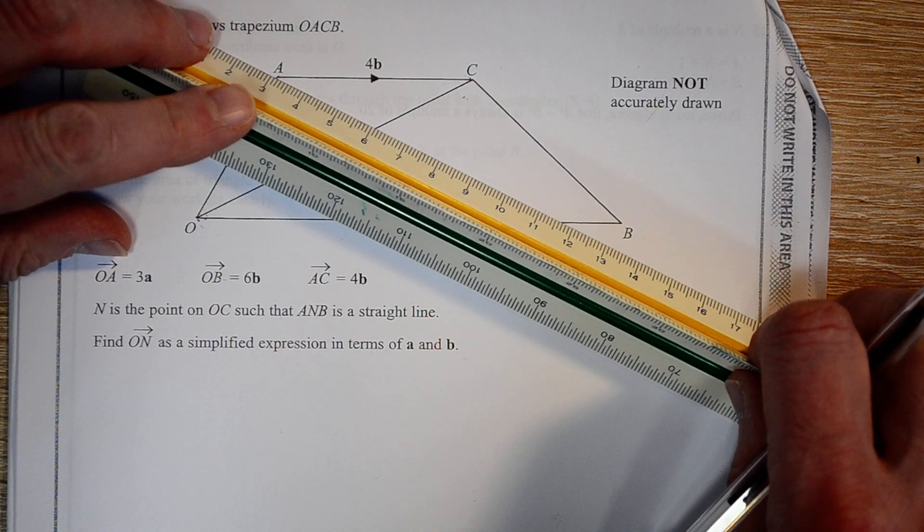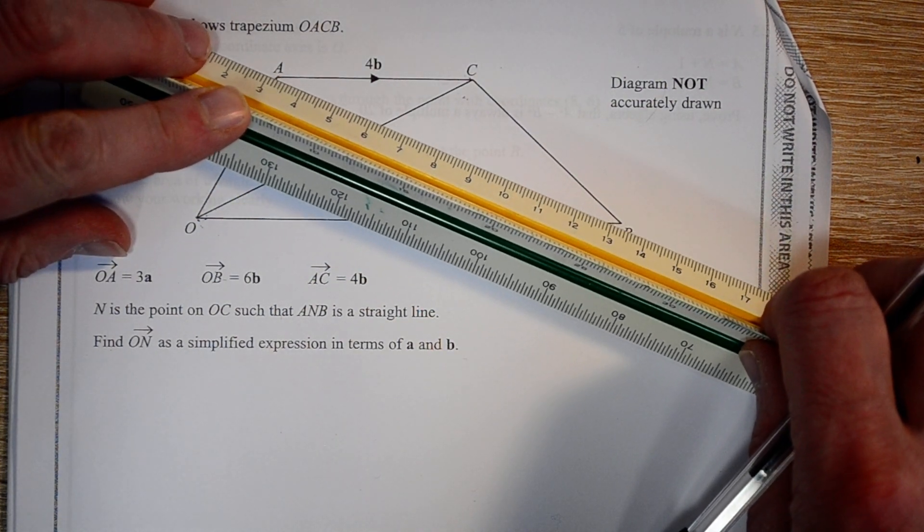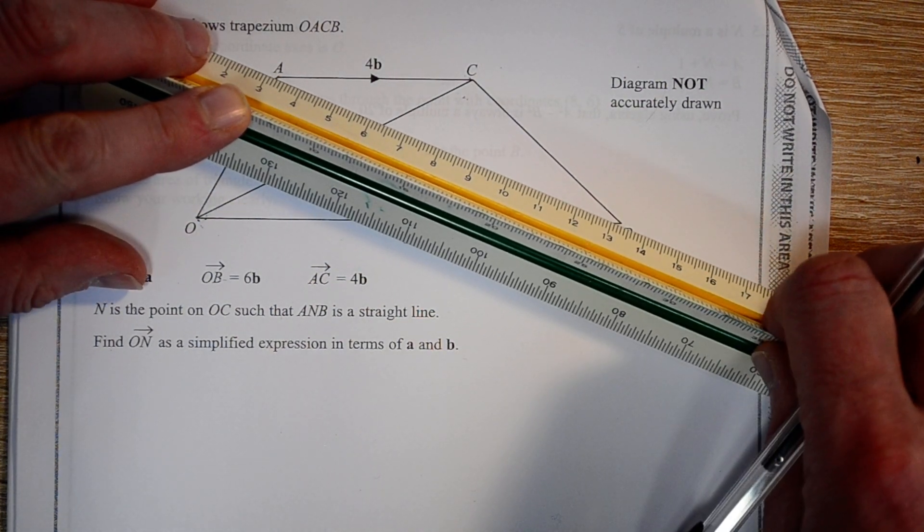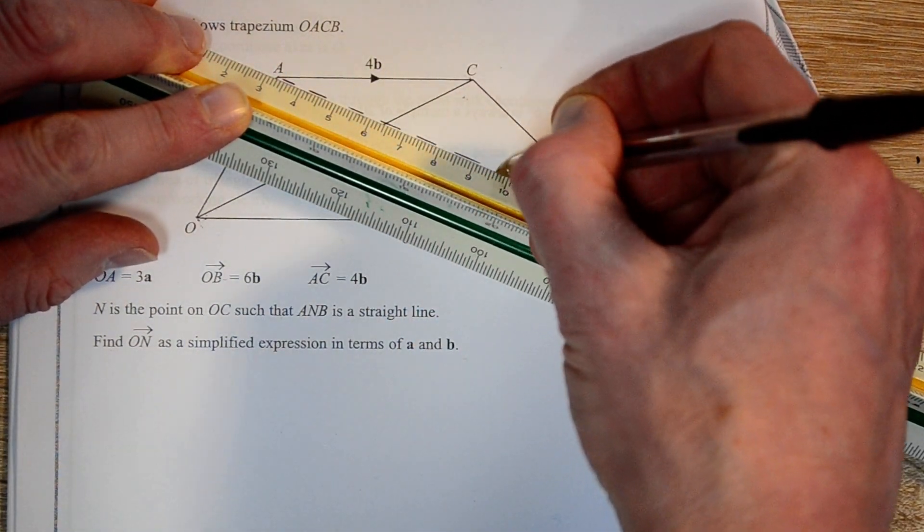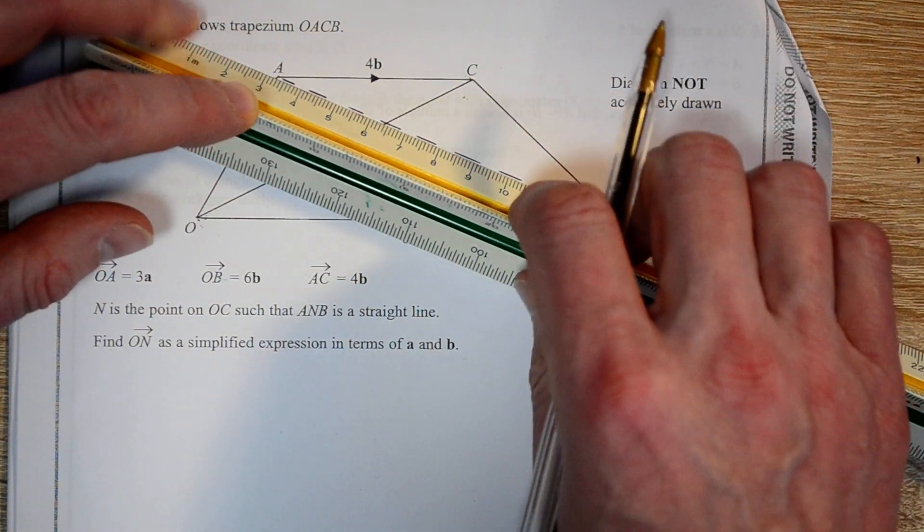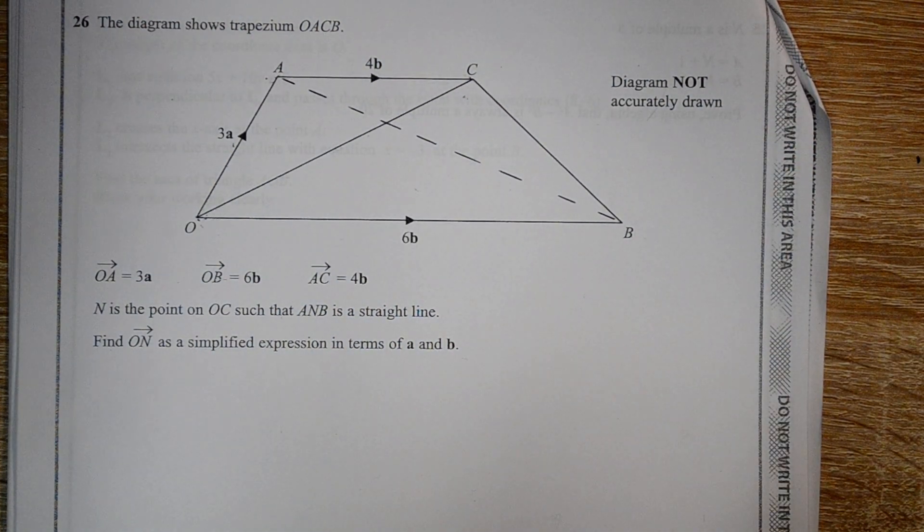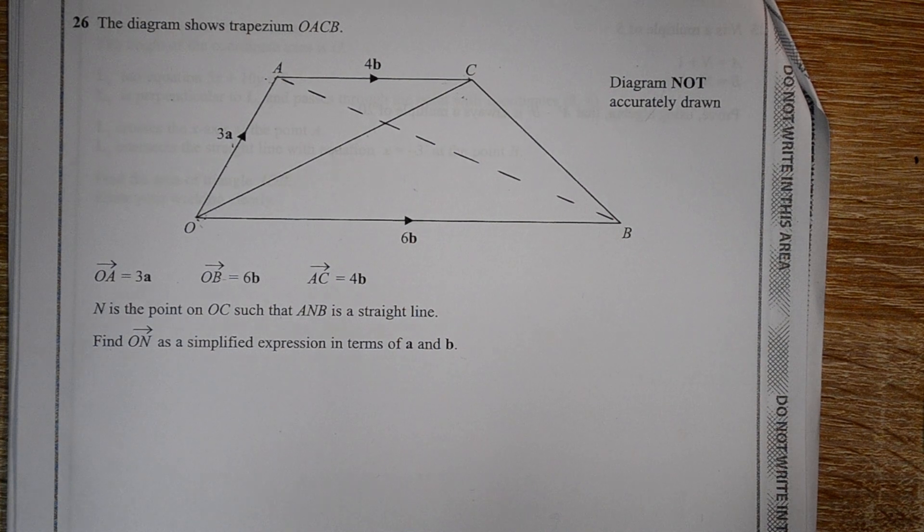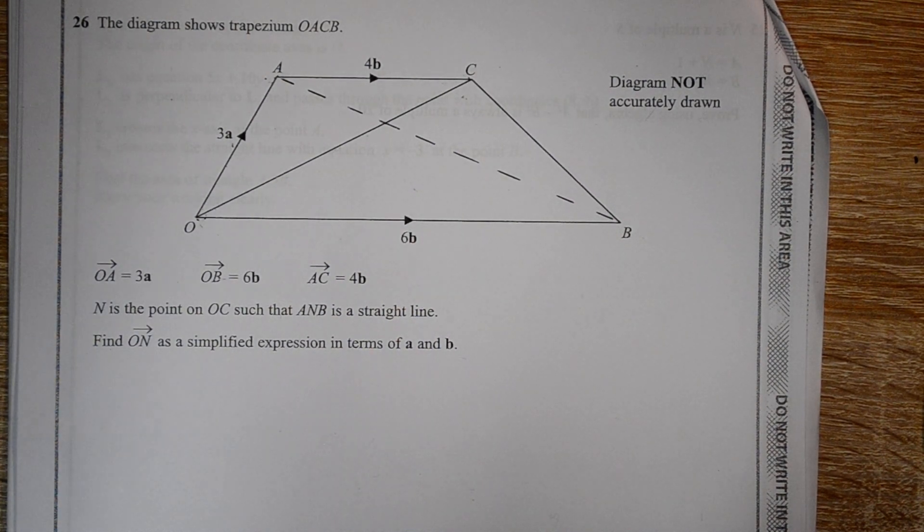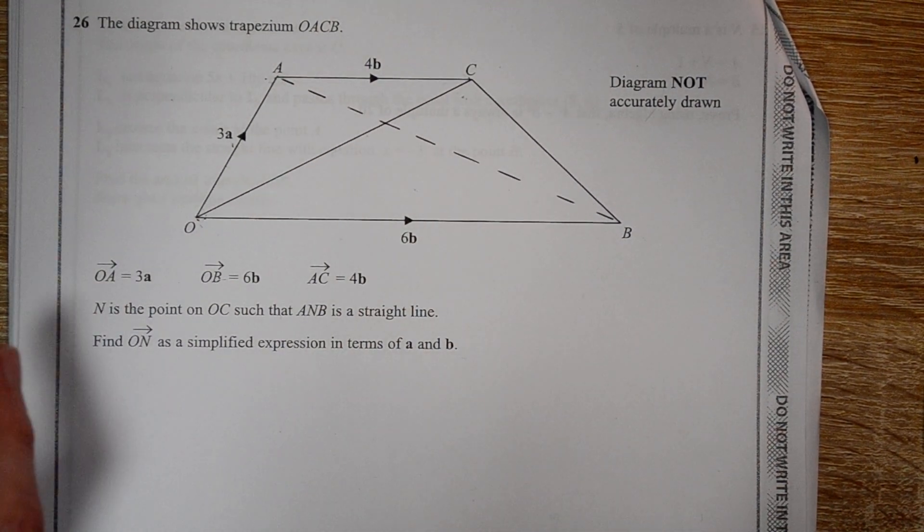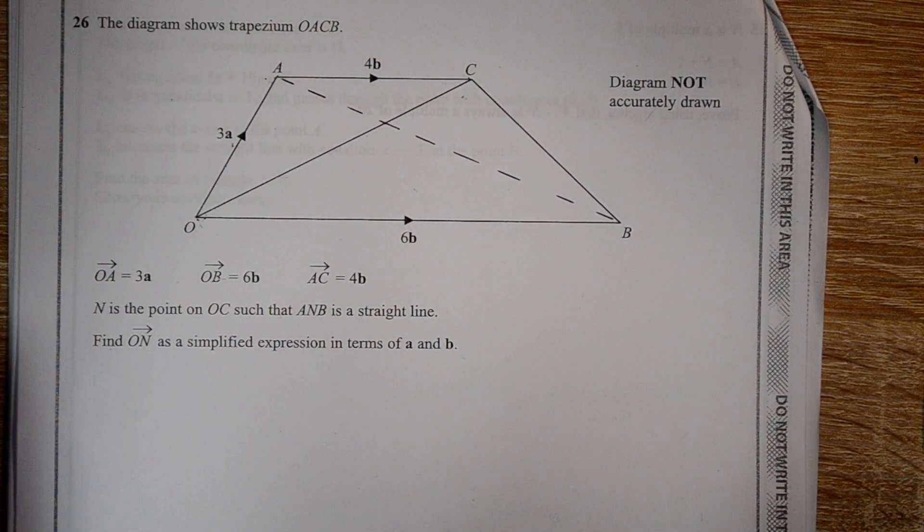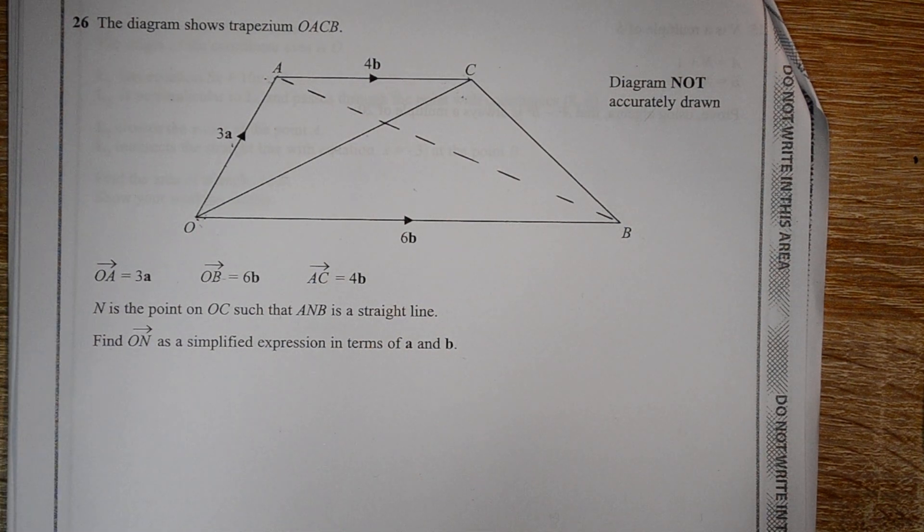It's where these two lines intersect that we're going to find the point N. Just as you could find the location of a point on a graph where two graphs intersect, because we're told how to find the vector to N in two different ways, we're going to find its precise location.